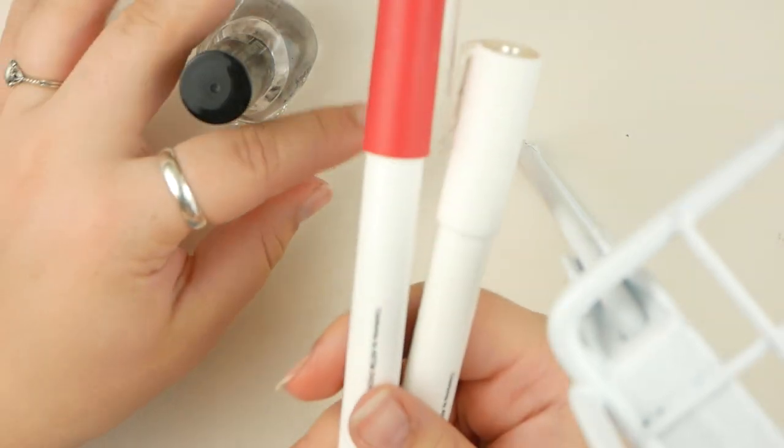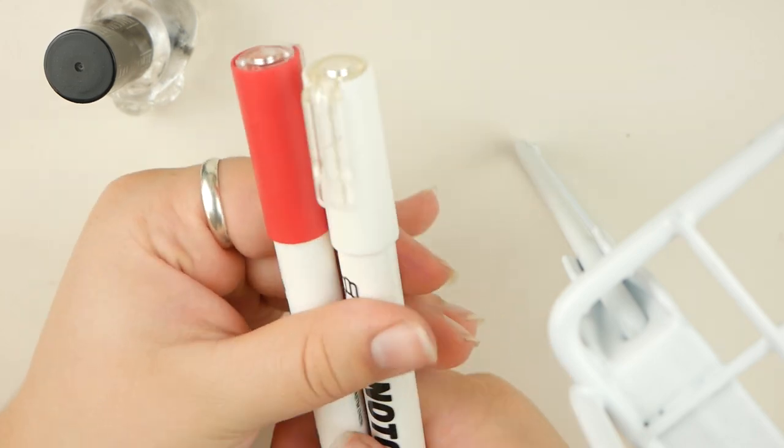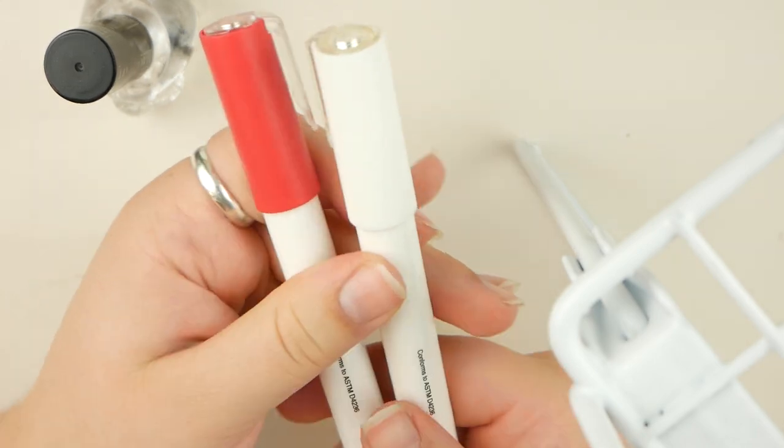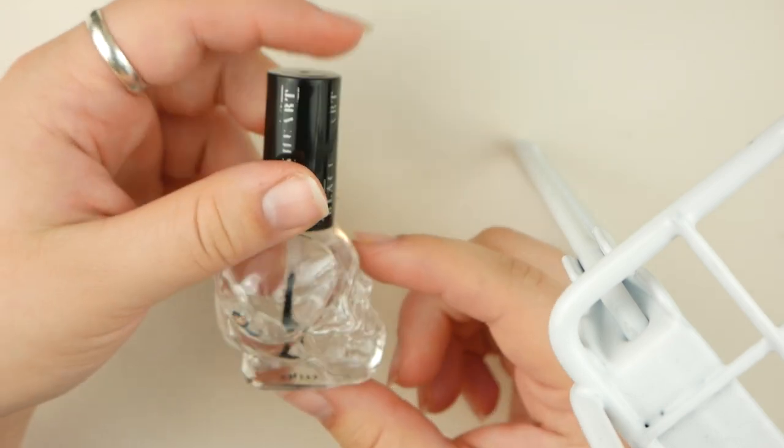And then you'll need your paint markers. Of course you can use regular paint too, but that would be super hard so I'm just gonna be using these paint markers. And then to seal the paint on there I'm using clear nail polish.